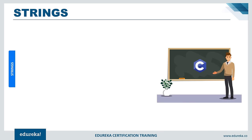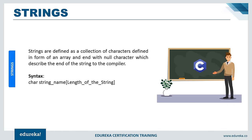Strings are defined as a collection of characters in the form of an array, ending with a null character which signals the end of the string to the compiler. Strings store alphabetical data (A to Z), not numbers or special symbols. The syntax for declaring a string in C is: char, followed by the string name and a fixed length in brackets.